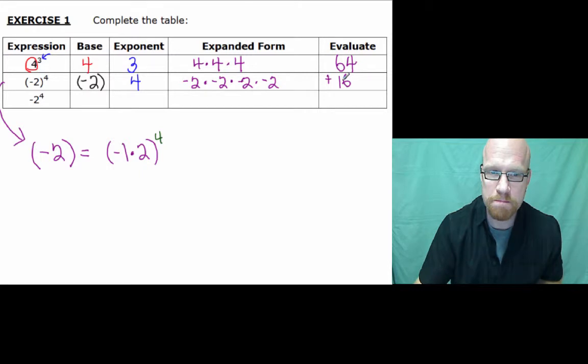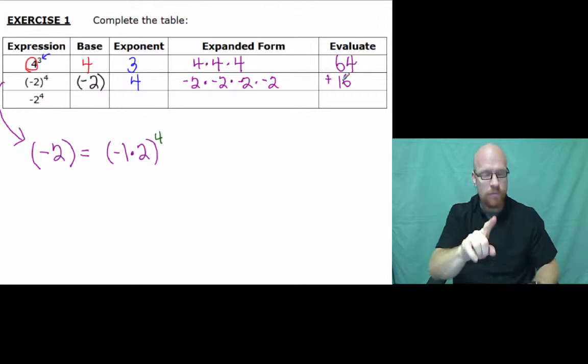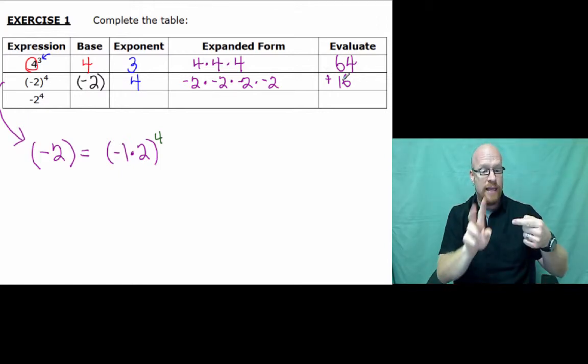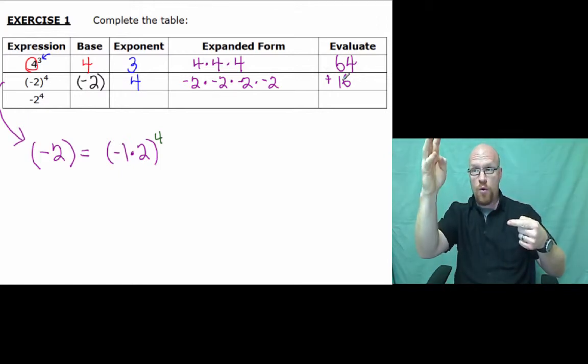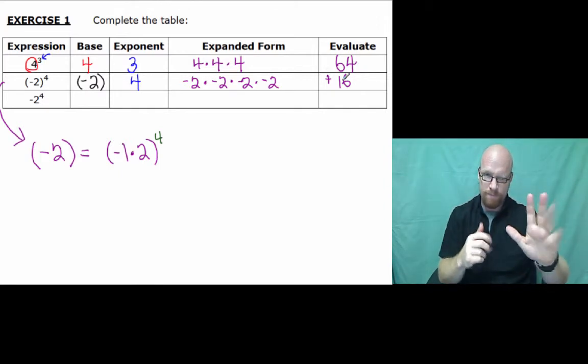Now, the last example, our third example, we have negative 2 to the fourth. Now, with this one, it's different because it doesn't have parentheses. The fourth power does not involve the negative sign. So, I'll show you how I write that out and what happens.